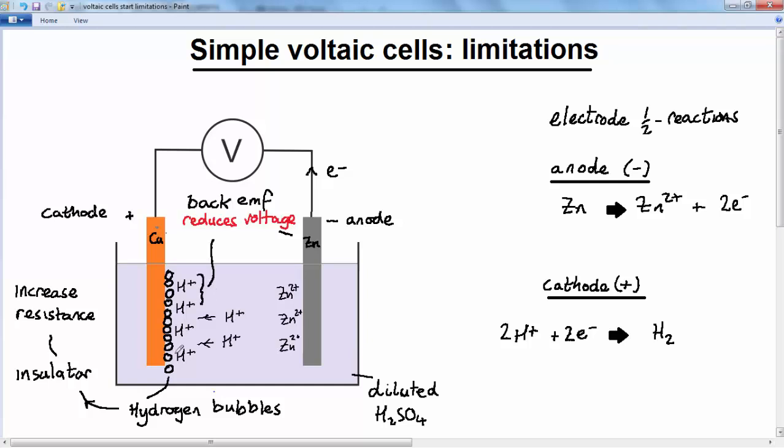So this is commonly known as the hydrogen gas problem for voltaic cells. I repeat, hydrogen bubbles collect on the copper cathode. This forms an insulating layer, which reduces the current flowing around the circuit rapidly.